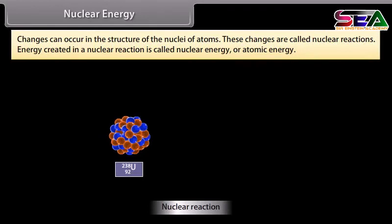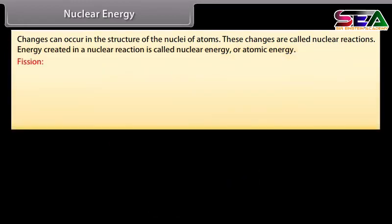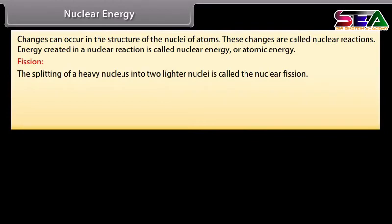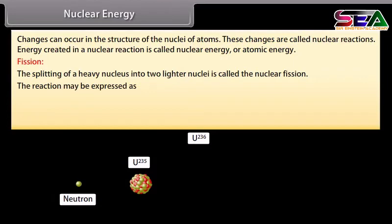Nuclear energy: Changes in the structure of atomic nuclei are called nuclear reactions. Energy created in a nuclear reaction is called nuclear energy or atomic energy. Fission: The splitting of a heavy nucleus into two lighter nuclei is called nuclear fission. When a slow neutron strikes a uranium-235 nucleus, it is absorbed and an unstable isotope U-236 is formed, which immediately breaks into two fragments, emitting two or three neutrons with release of enormous energy.